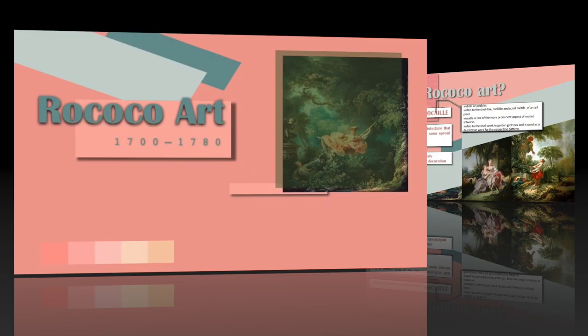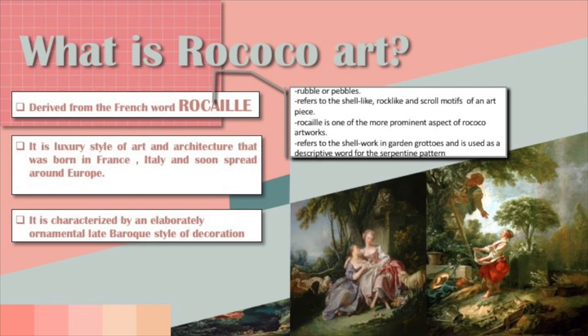Rococo Art, 1700 to 1780. Rococo, or late Baroque, is an exceptionally ornamental and theatrical style of architecture, art, and decoration which combines asymmetry, scrolling curves, gilding, white and pastel colors, sculpted molding, and trompe l'oeil frescoes to create surprise and the illusion of motion and drama.